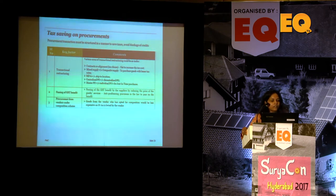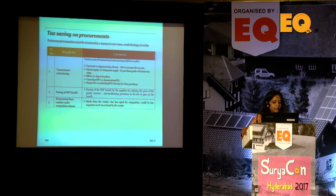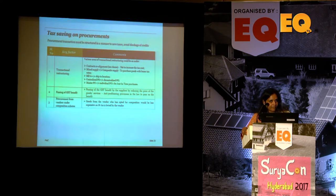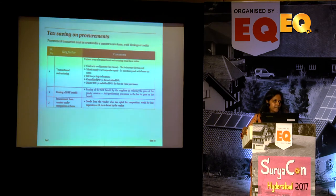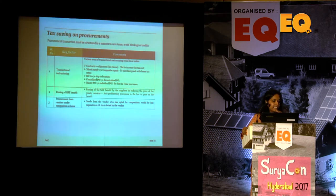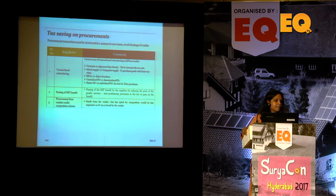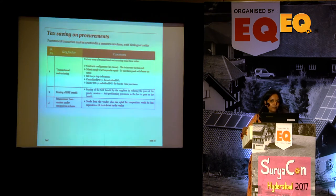One more point to consider — wherever we are procuring goods and cannot take credits, we can evaluate buying from composition vendors, as the rate would be lower. The same product subject to 18% from a registered vendor could be chargeable at only 1% if procured from a composition vendor. This is a planning option worth considering.